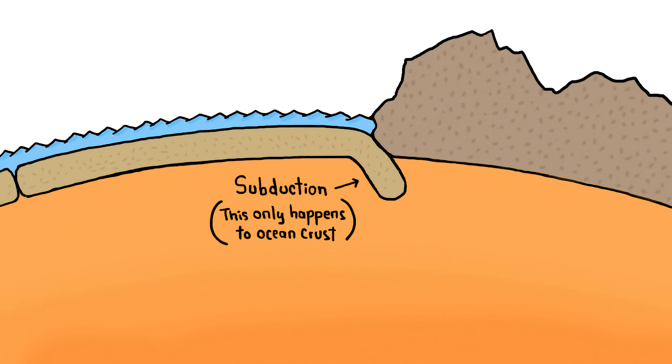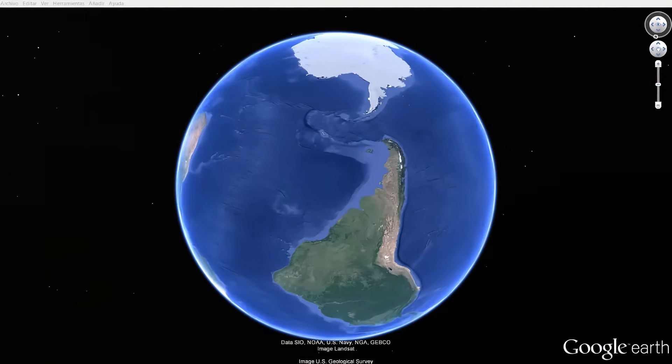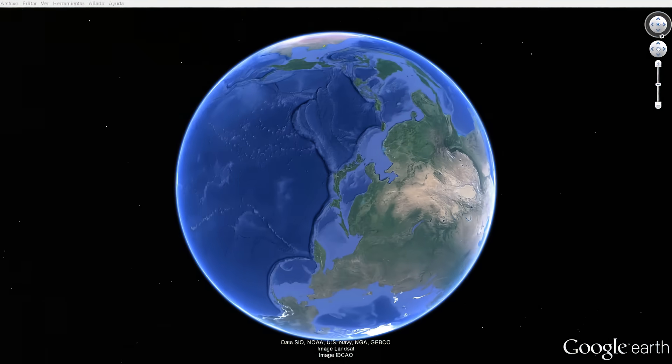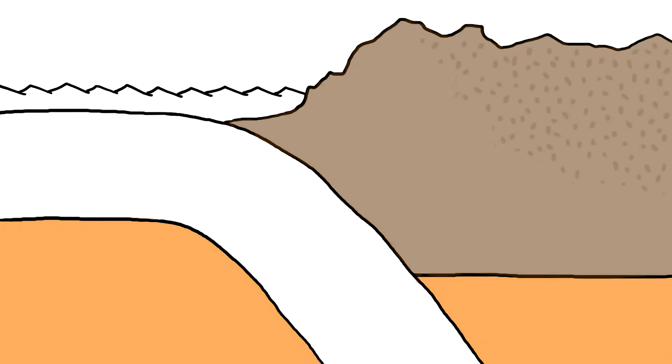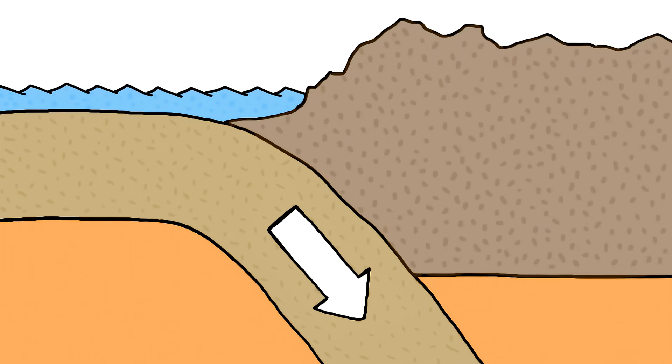The bigger the sunken portion of the plate becomes, the harder it pulls and the faster the remaining plate behind it moves. You can find where this is happening just by looking at Google Earth. The incredibly deep, narrow ocean trenches visible off the coasts of some continents and island chains mark the creases formed as ocean crust plunges downward, bending the edge of its neighbor in the process.